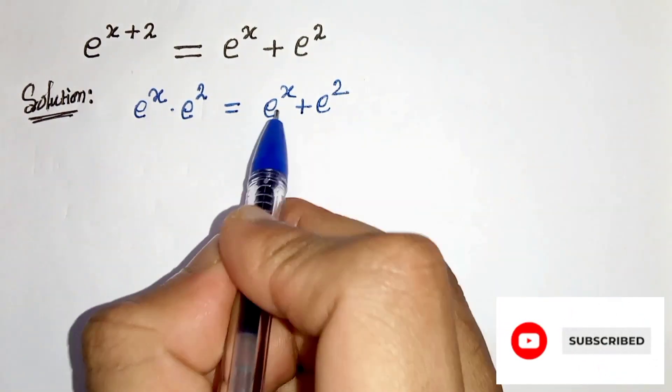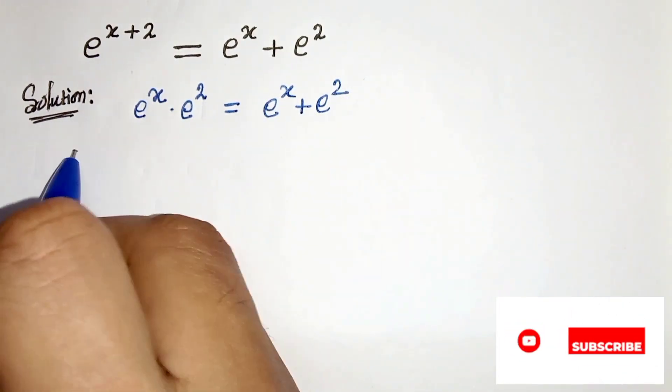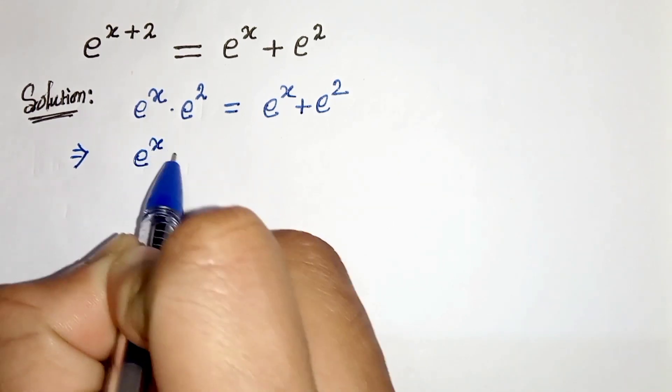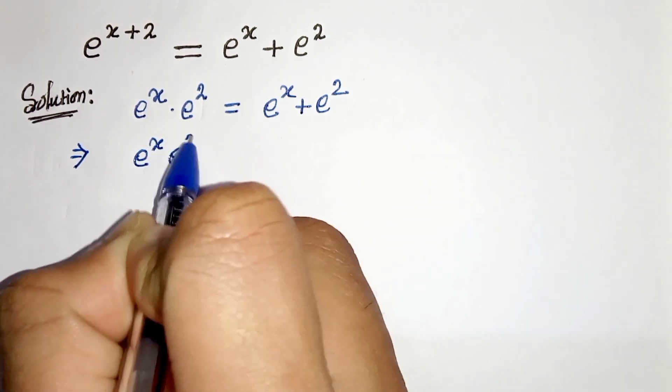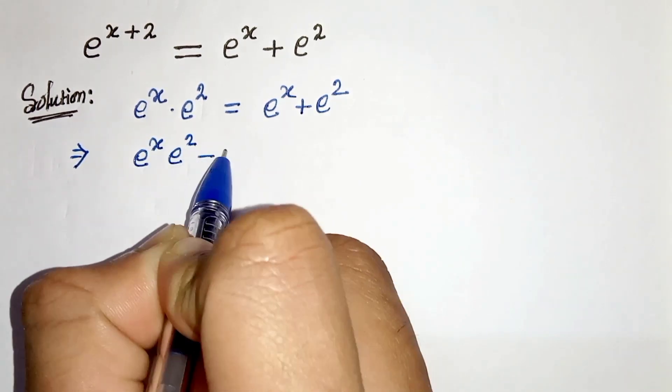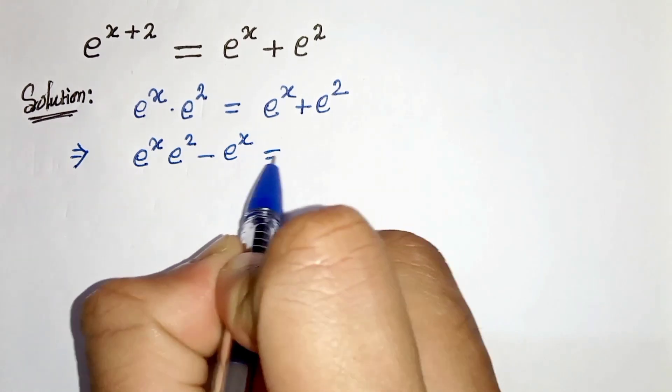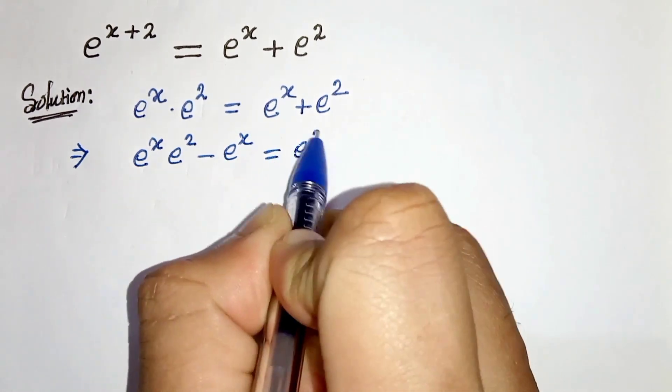Now let's take e to the power x to the left hand side. So we will get e to the power x times e to the power 2 minus e to the power x, equals e to the power 2.